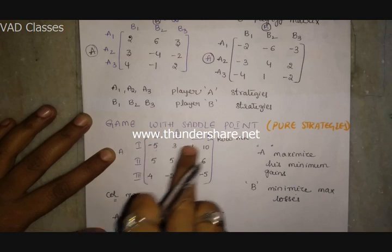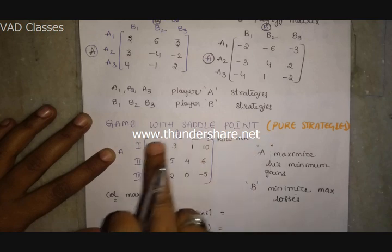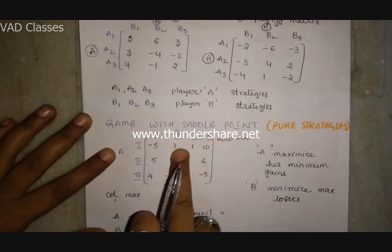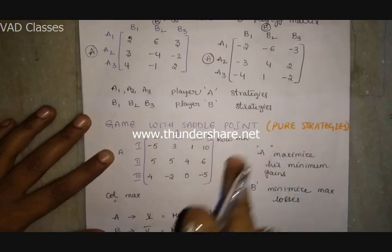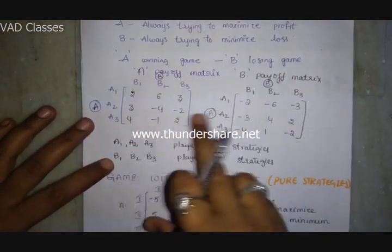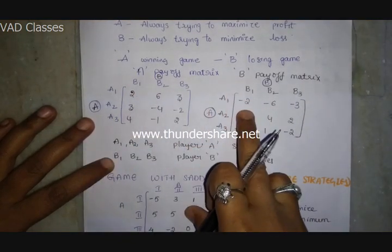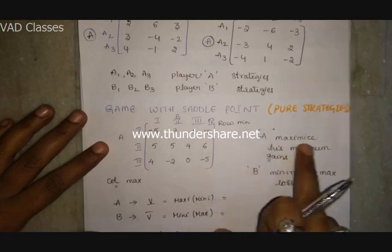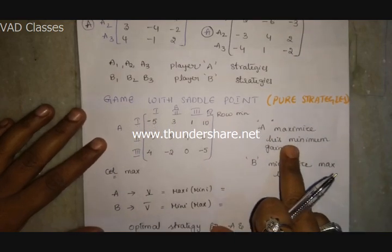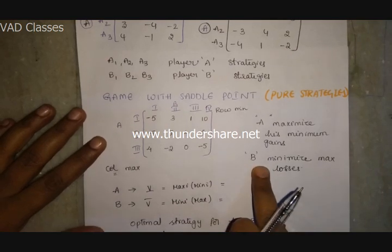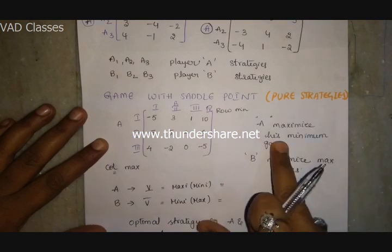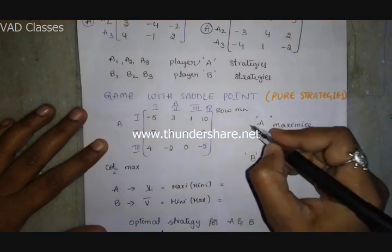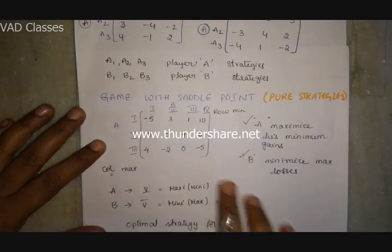Here the value of the game is minus five, meaning A is losing five. If this is the matrix for player B, then minus five becomes plus five, and if A gets plus three, B is losing three. So the values in the payoff matrix change sign depending on whose perspective we view. Remember: player A always maximizes his minimum gains, and player B always tries to minimize his maximum losses.